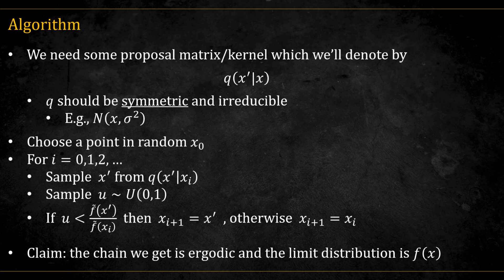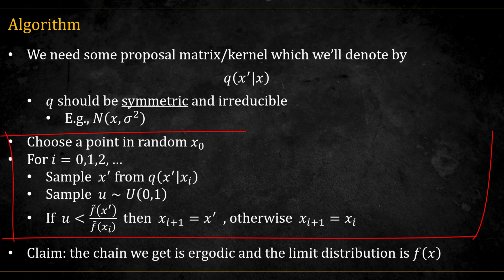We will need some proposal matrix or kernel which we'll denote by Q. This proposal is part of the transition, but not all of it, as we shall see. Q needs to be symmetric and irreducible. For example, some Gaussian centered at the current point.